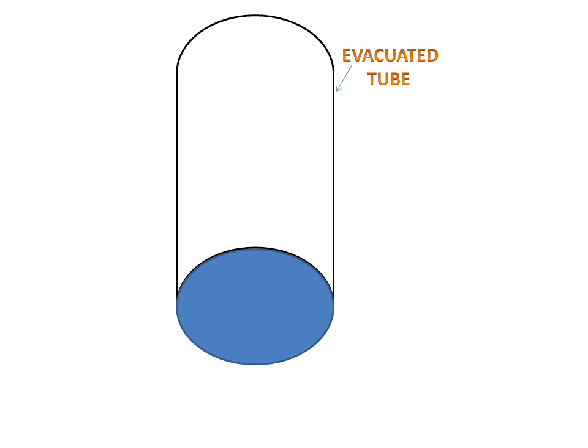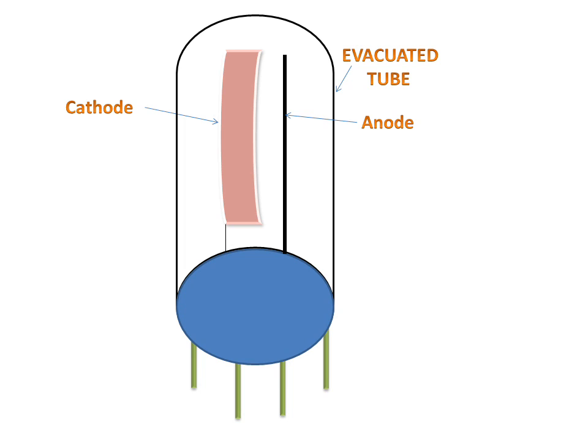First, we will discuss the parts of the photoemissive cell. We have an evacuated tube with a vacuum, and a cathode. The cathode shape can be V-shaped or curved. This is the anode, which is wire-type, and these are the pins attached to the evacuated tube.